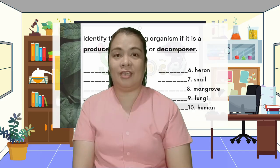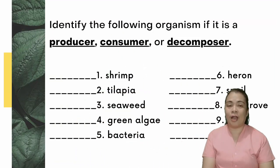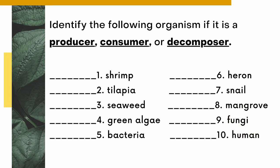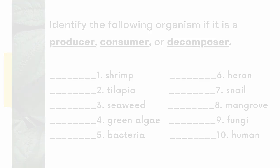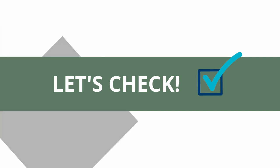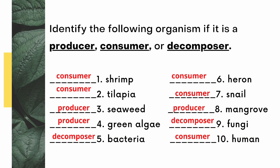You did a great job, everybody. Let's have another activity. This time, we're going to identify the following organisms as either a producer, consumer, or decomposer. Let's check your work. What an awesome job, kids!